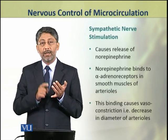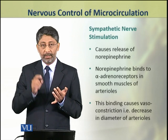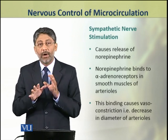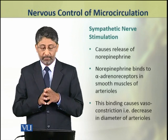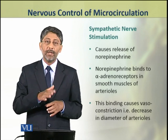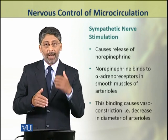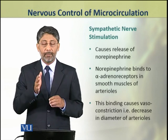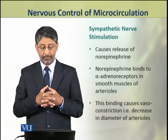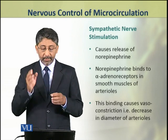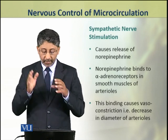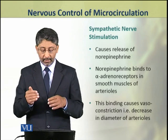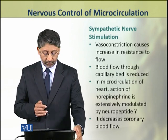Sympathetic nerve stimulation in the arterioles causes the release of norepinephrine. Norepinephrine binds to alpha-adrenoreceptors in the smooth muscles of arterioles. This binding causes vasoconstriction, that is, a decrease in the diameter of the arterioles.